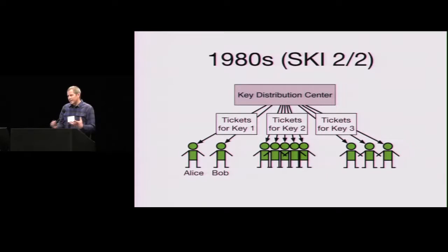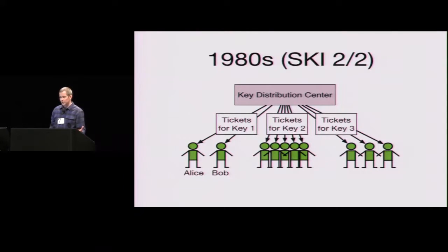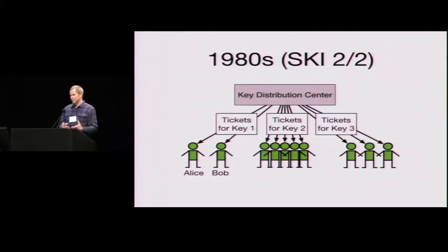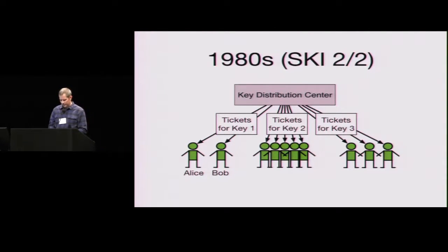But it doesn't get us to a large-scale messaging system where anyone can send anyone a message, unless we put the KDC online so Alice can contact it and say, give me tickets for Bob. That's the Kerberos model, and in this timeframe the U.S. government built secure phone systems using the same model. But it's pretty awkward to have to contact an online KDC every time you want to send a message or have a phone call. It's a performance hit, a reliability problem, and a security problem if the online KDC gets compromised.